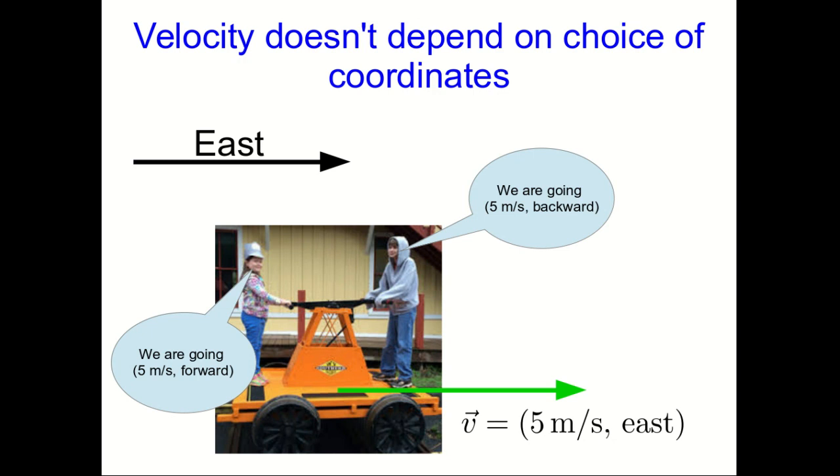Well, this is because you may disagree on how you've defined your coordinates. One of you might use those blue coordinates, and the other might use those orange coordinates. That doesn't change the fact, though, that the velocity, no matter how you define your coordinates, is this green vector that points east.